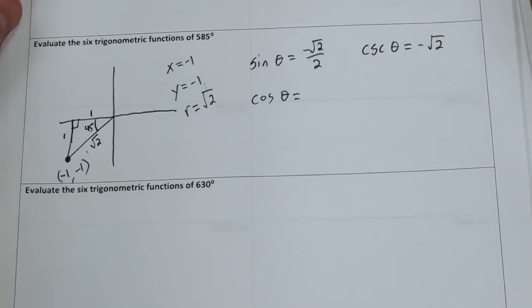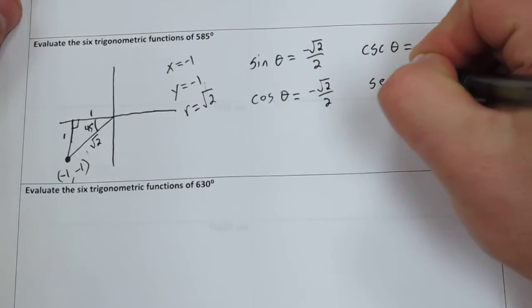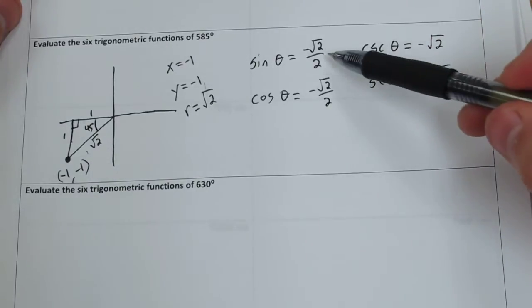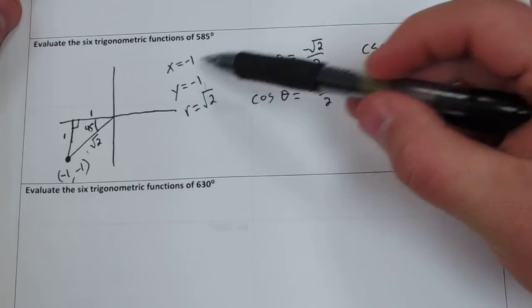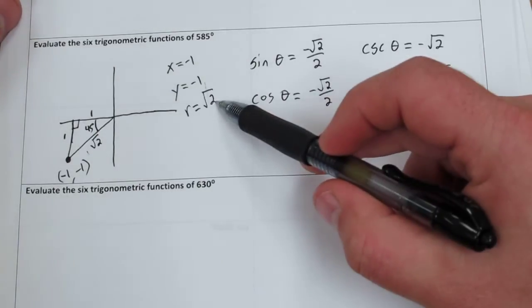Cosine of theta will also be negative rad 2 over 2, and secant theta will also be negative rad 2. That's because the x and y-coordinate are the same here, so sine and cosine turn out to be the same because we're both using the same r.